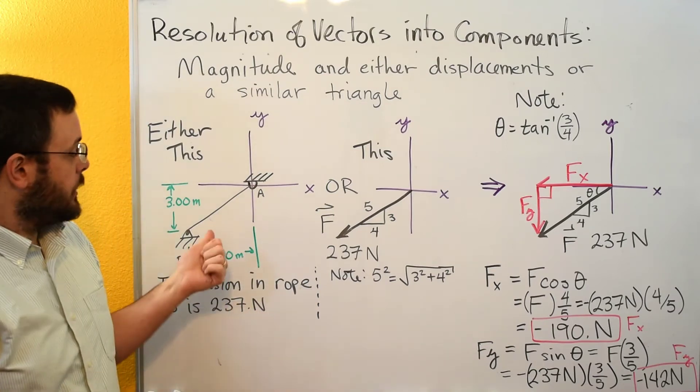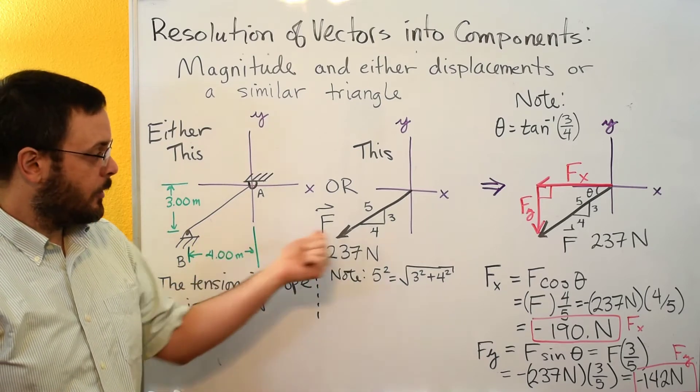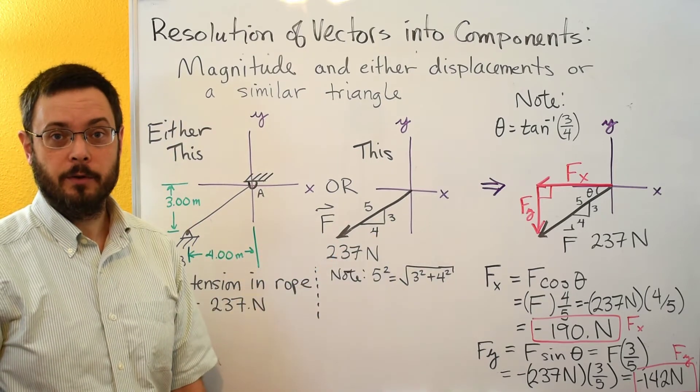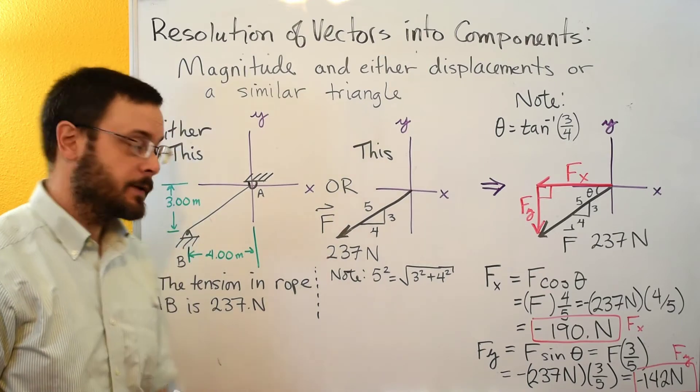This is if we have distances given to the vector or if we have a similar triangle written on the vector. So let's look at both cases.